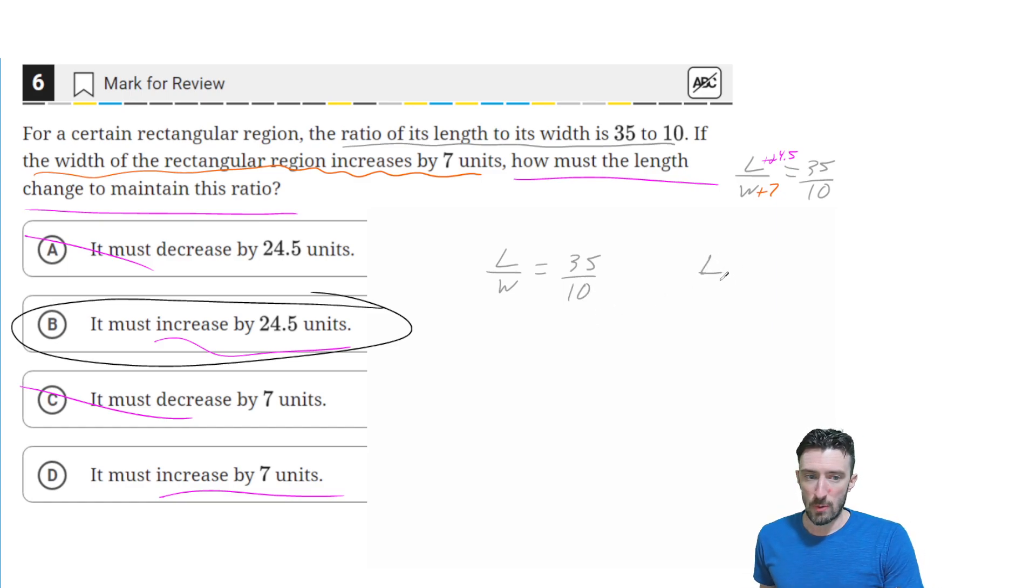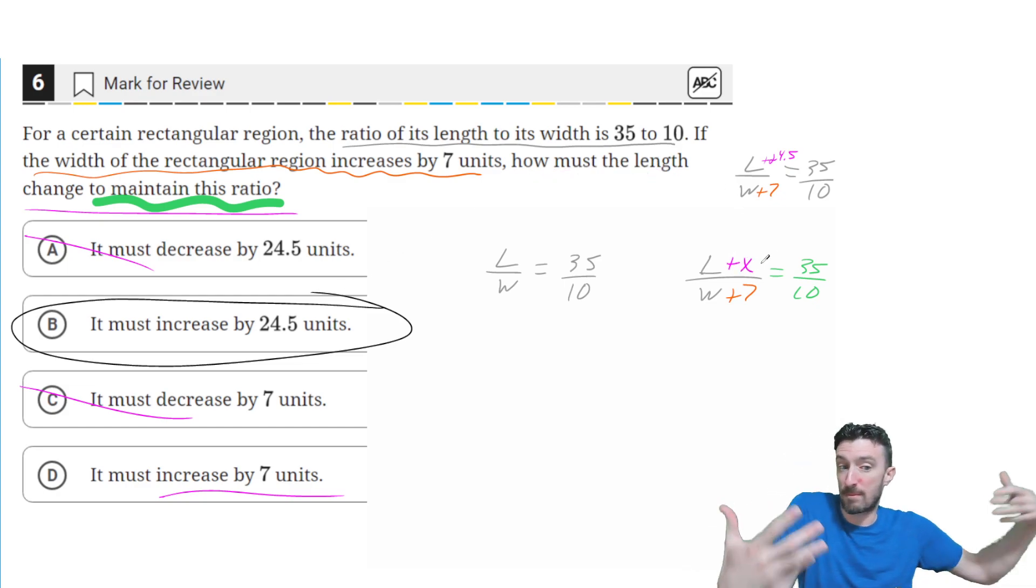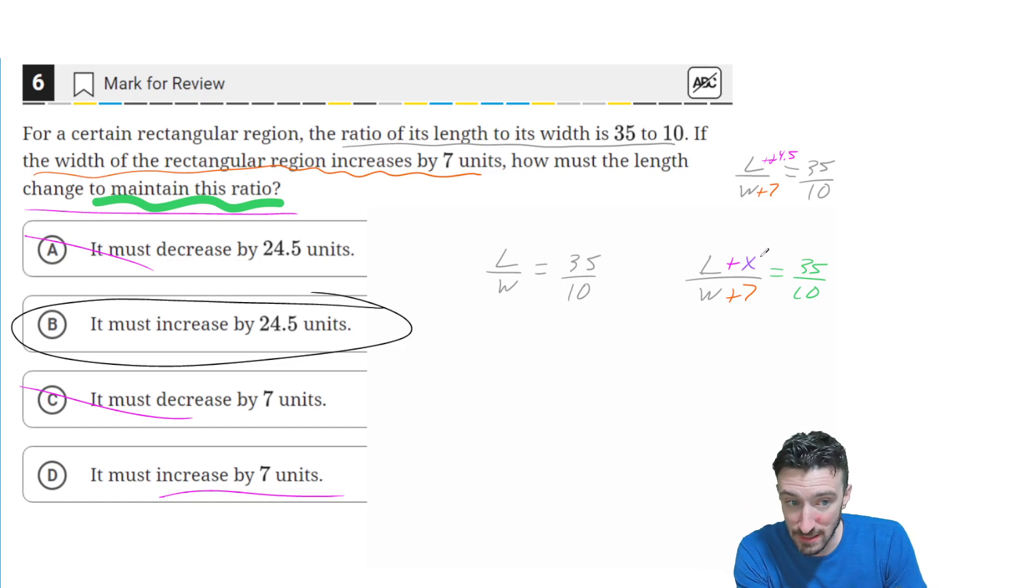And then, if we modify that a little bit to make the change about the width, and we want to maintain the ratio, that means we want the ratio to still stay 35 over 10, then what needs to happen to the length? Well, what needs to happen to the length is it needs to add by a certain amount, and I'm going to call that amount that needs to add x.